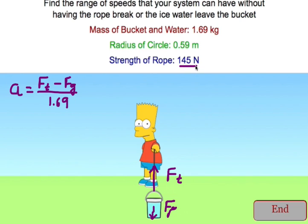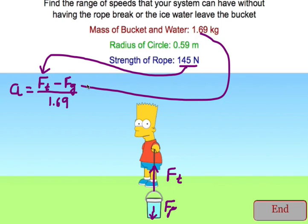It tells us the breaking strength of the rope. So to find our maximum speed we put the breaking strength of the rope in here. We use our mass to get our force gravity here and we get the acceleration of the bucket. This acceleration is toward the center of the circle.